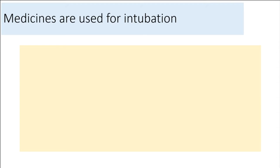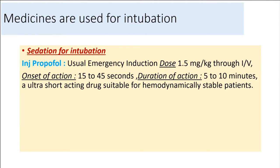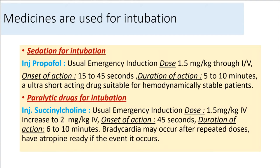Medicines used for intubation include: for sedation, INJ-propofol with a usual emergency induction dose of 1.5 mg/kg IV, onset of action 15–45 seconds, duration of action 5–10 minutes — an ultra-short-acting drug suitable for hemodynamically stable patients. For paralysis, INJ-succinylcholine with a usual emergency induction dose of 1.5 mg/kg IV, increased to 2 mg/kg IV if needed, onset of action 45 seconds, duration of action 6–10 minutes. Bradycardia may occur after repeated doses; have atropine ready in the event it occurs.